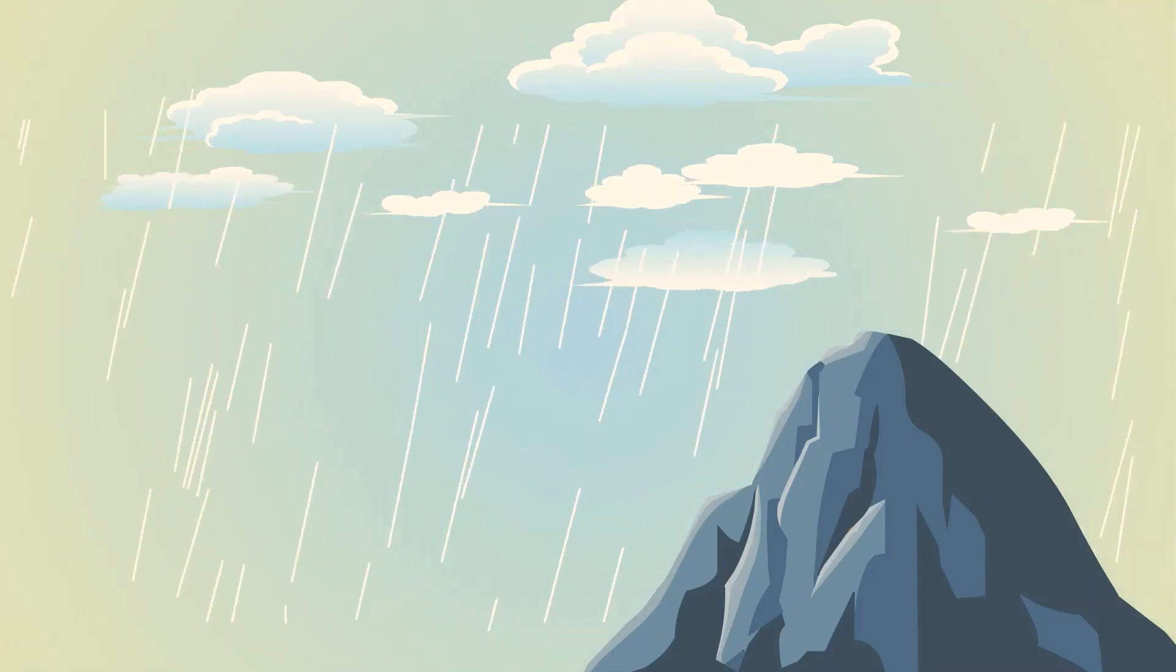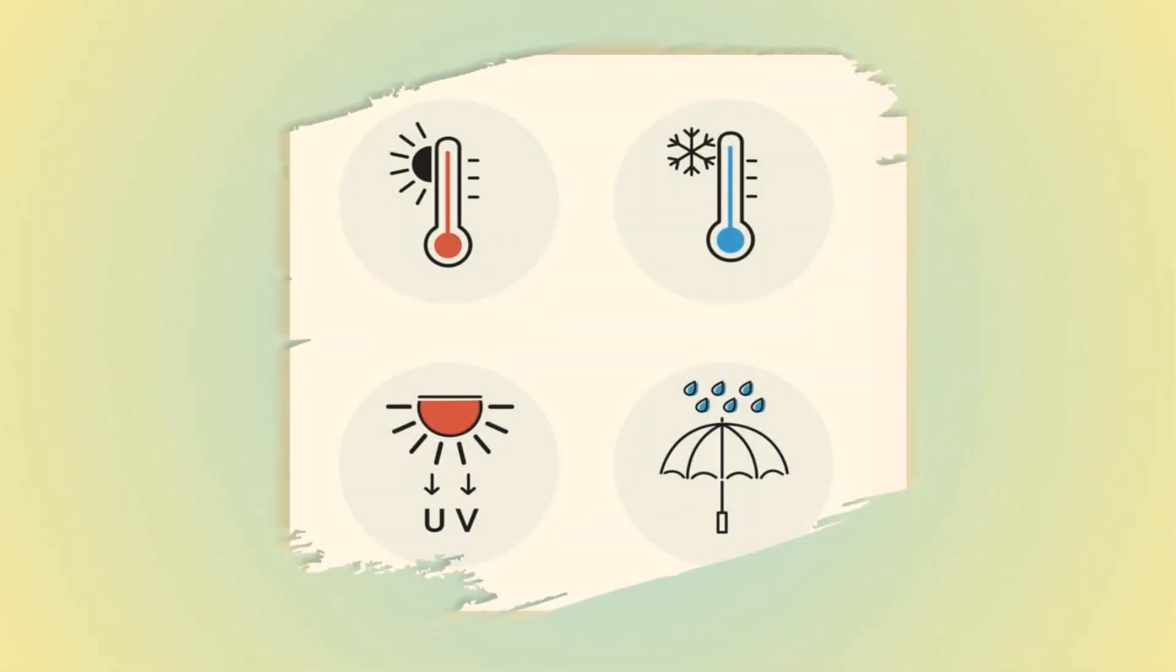Climate change, as you may already have guessed, is the change in the usual weather found in a place. This could be a change in how much rain a place usually gets in a year, or it could be a change in a place's usual temperature for a month or a season.